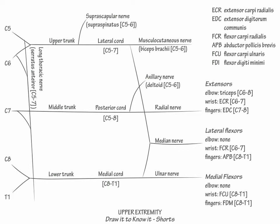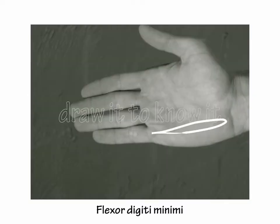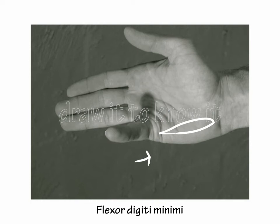and flexor digiti minimi C8 to T1, which flexes the fifth digit toward the palm. This concludes our diagram.